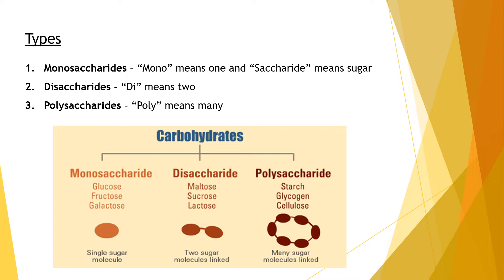Next, we have disaccharides, which is a combination of two monosaccharides — 'di' means two. Followed by this, we have the polysaccharides, where 'poly' means many and there are many monosaccharides attached to each other to give rise to a polysaccharide carbohydrate. Looking at this flow chart, carbohydrates are divided into three types: monosaccharide, disaccharide, and polysaccharide.